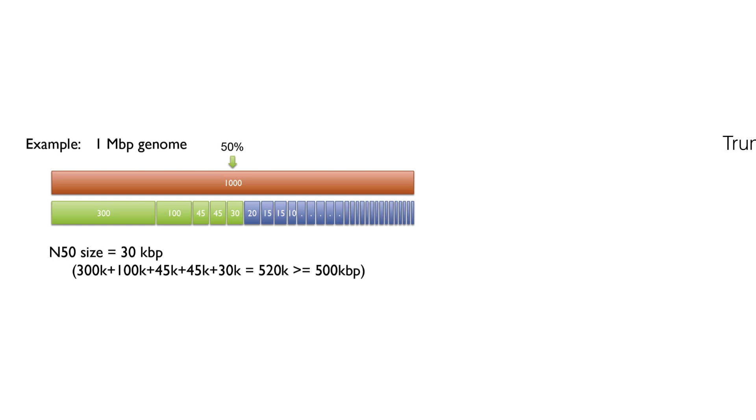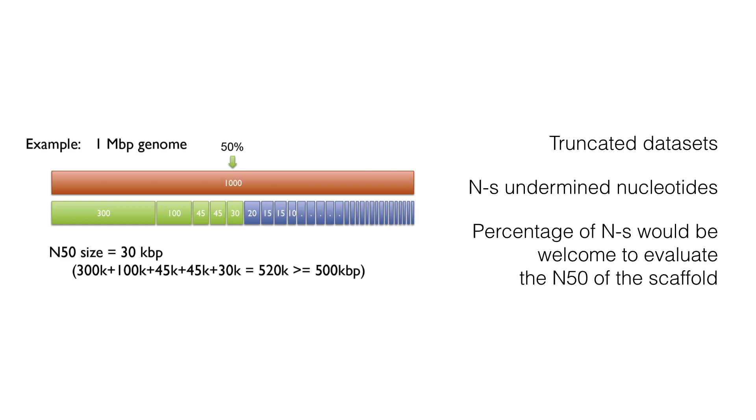However, beware of the truncated data sets that could artificially raise N50. In case of scaffolds, the N50 statistics can be deceiving because scaffolds can have a large number of empty spots or N's or indeterminate nucleotides and still show you high N50 value. So a percentage of N's could be welcome to evaluate N50 of the scaffold.